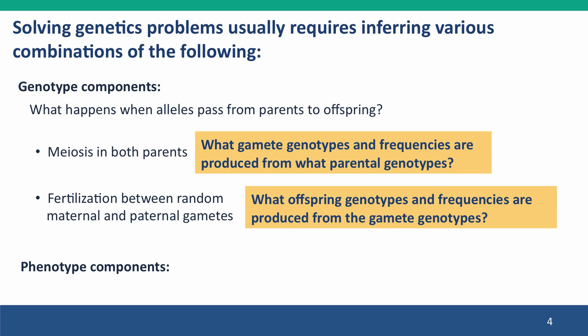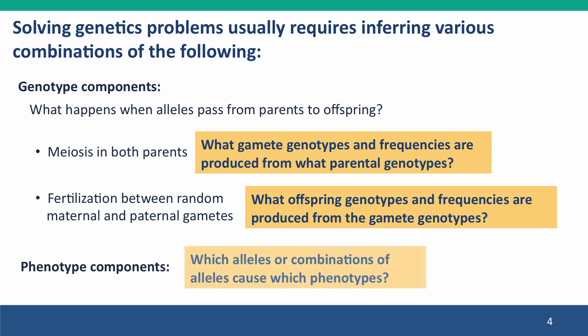And the third component is phenotype. You have to know which alleles or which combinations of alleles cause which phenotypes. All of these are things that you might get clues from the problem statement. You may get some of this information from the problem, and the rest of it you have to figure out as a kind of puzzle.